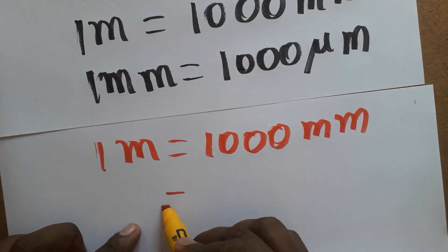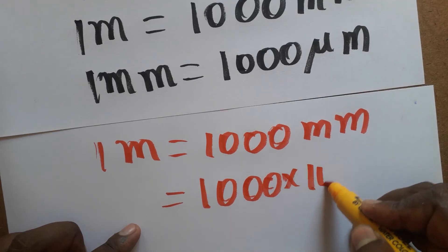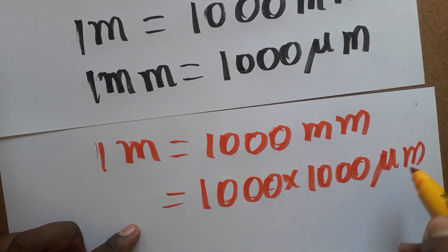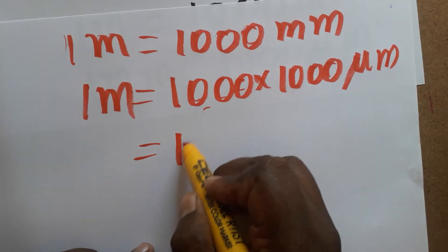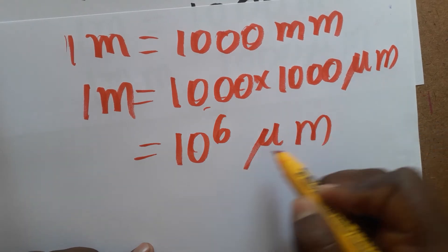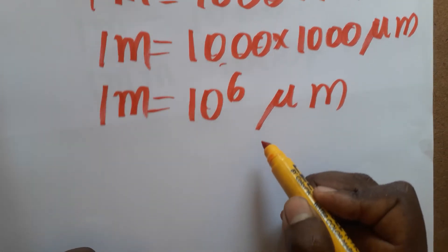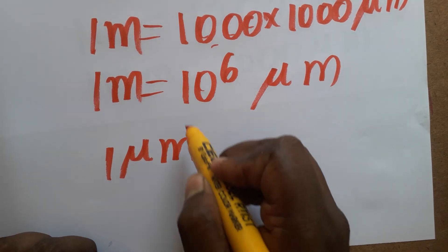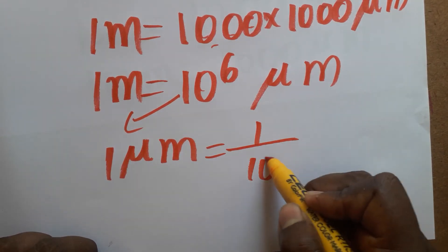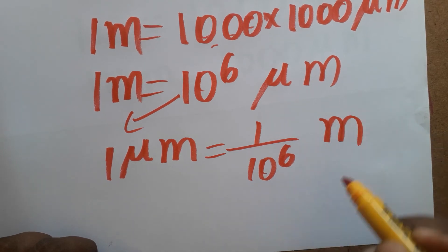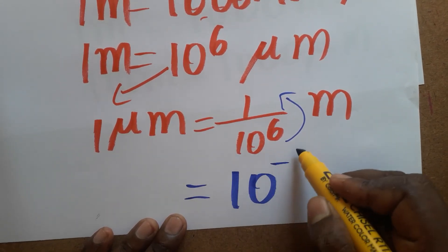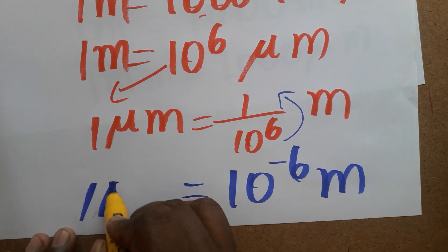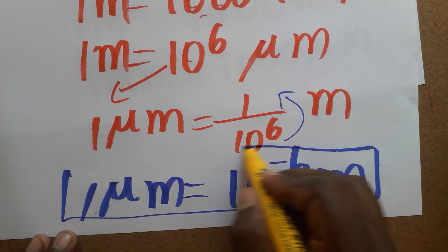So we have to multiply: 1000 millimeters into 1000 micrometers, giving us 10 power 6 micrometers. So 1 meter equals 10 power 6 micrometers. Therefore, 1 micrometer equals 1 divided by 10 power 6 meters. Bringing 10 power 6 to the numerator, we change the sign to get 10 power minus 6.